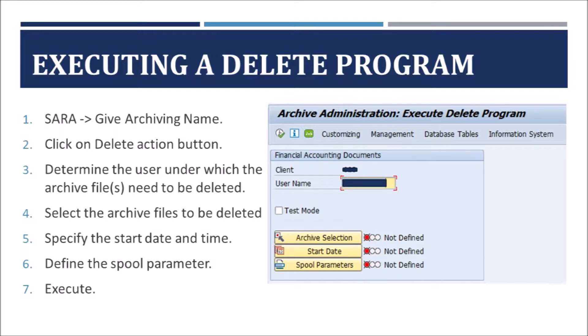To schedule delete jobs manually, go to the SARA transaction, provide the archiving object name, and click the Delete Action button. First, specify the user under which the archive files need to be deleted. Then, select the archive files by clicking the Archive Selection button. After that, specify the start date and time and define the spool parameters. Finally, execute — this triggers individual delete jobs for each archive file.